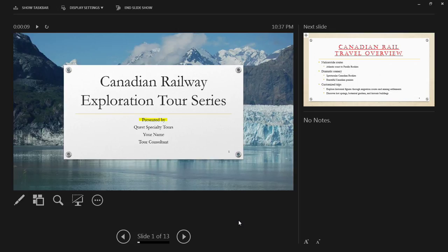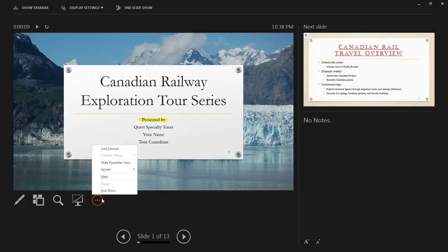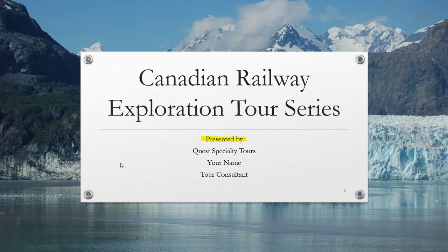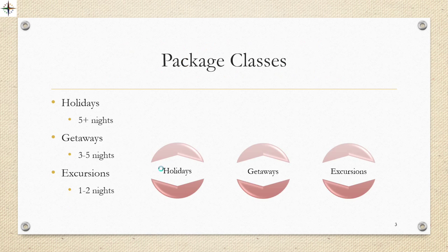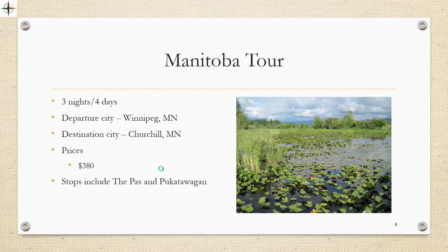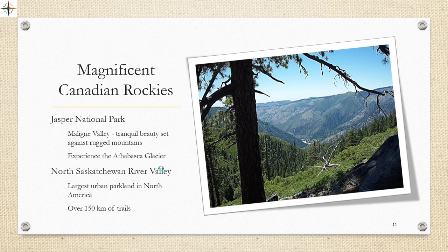In step seven, it tells us to click on the three dots again — the More Slideshow Options — and then click on Hide Presenter View. Then it tells us to click anywhere to advance to the next slide, or we can press the arrow to advance. On step eight, it tells us to press Enter to advance through the entire slideshow until we see a black slide, so we just go through the rest of our presentation until we hit that black slide.